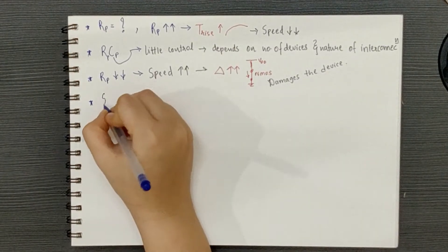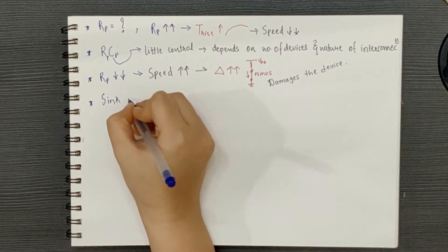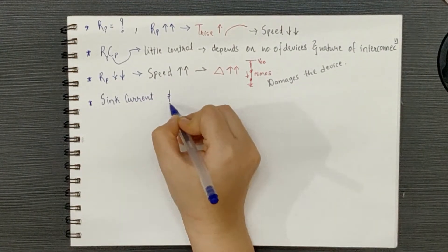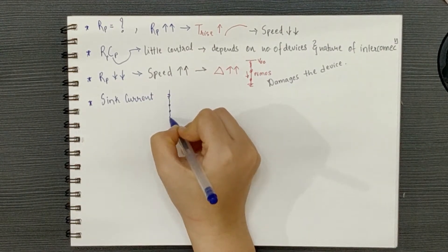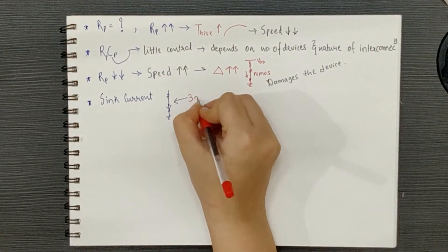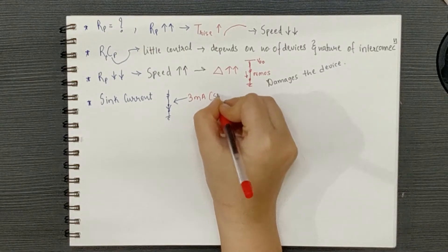So, according to the I2C specification, the sink current in the standard mode can have a maximum value of 3mA. Thus, we must consider this value while selecting the RP or the pull-up resistor for the circuit. Now,